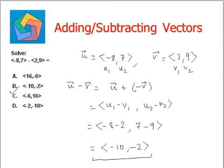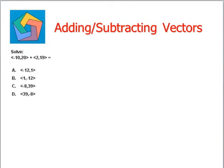Let's try the next question. Solve, we are given vector u as negative 10 comma 20 while the second vector v is given by 2 comma 19.